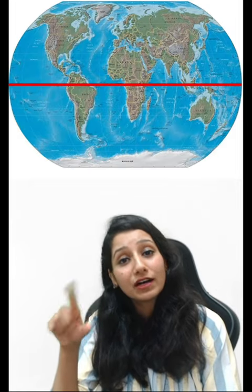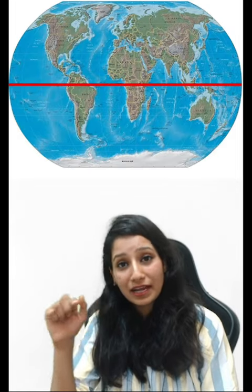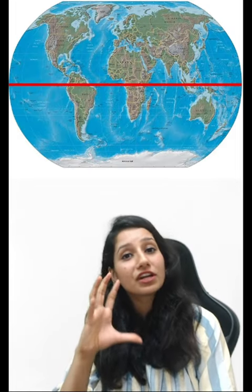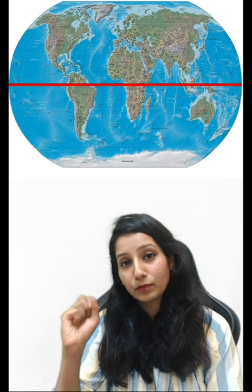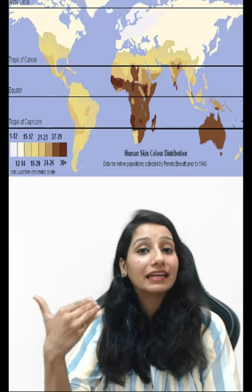The more UV radiation there is, the more skin will be damaged. So melanin protects it. Now here, at the equatorial plane of Earth, a lot of people live. So they develop more melanin pigment to protect them.